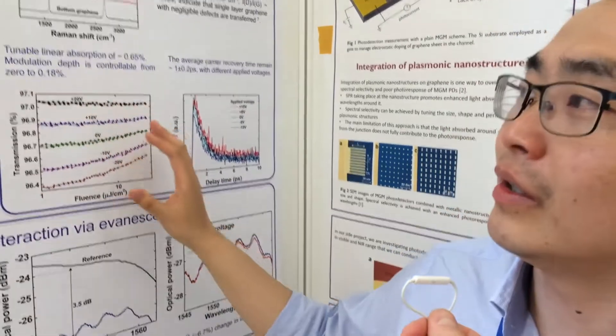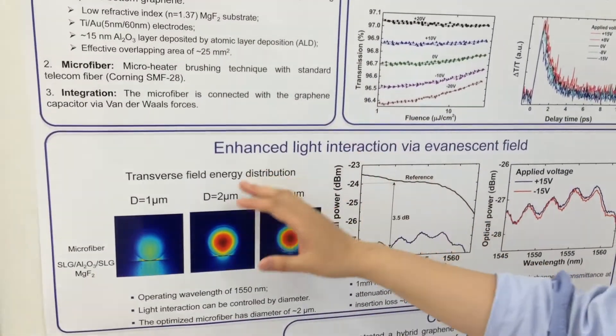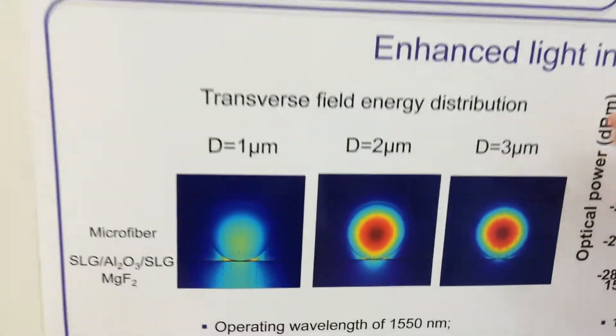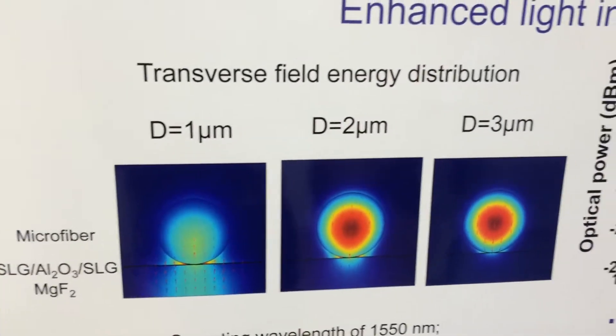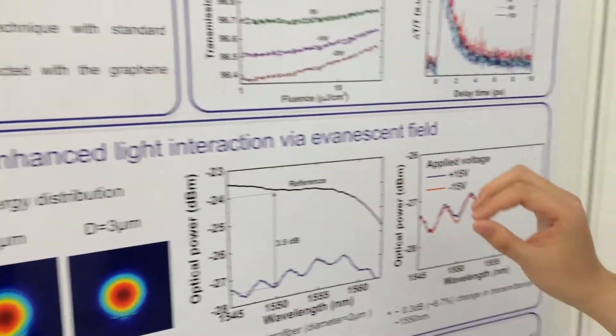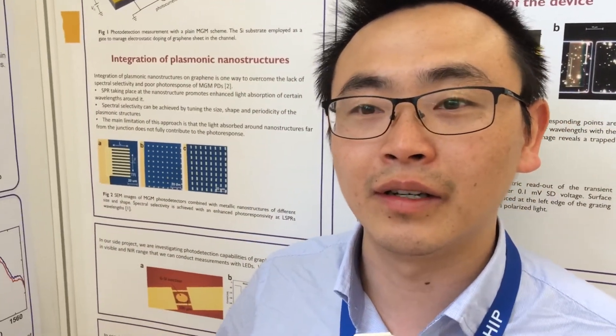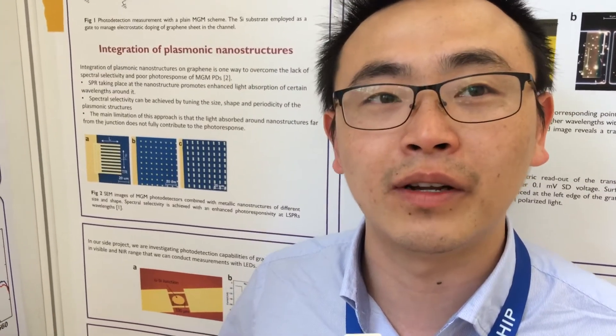Here we demonstrated that, from the simulation, we optimized the size of the microfiber, and we fabricated this fiber and integrated it with the graphene capacitor. The light interaction can be enhanced almost ten times higher. This device can be used as a controllable, saturable absorber in the ultra-fast fiber laser to get some flexible controllability.